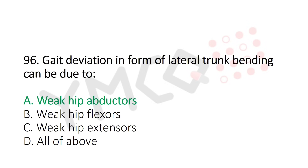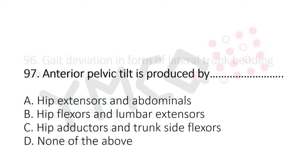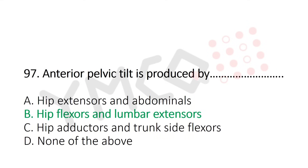Question 97: Anterior pelvic tilt is produced by — option A: hip extensors and abdominals, option B: hip flexors and lumbar extensors, option C: hip adductors and trunk side flexors, option D: none of the above. The answer is option B: hip flexors and lumbar extensors.